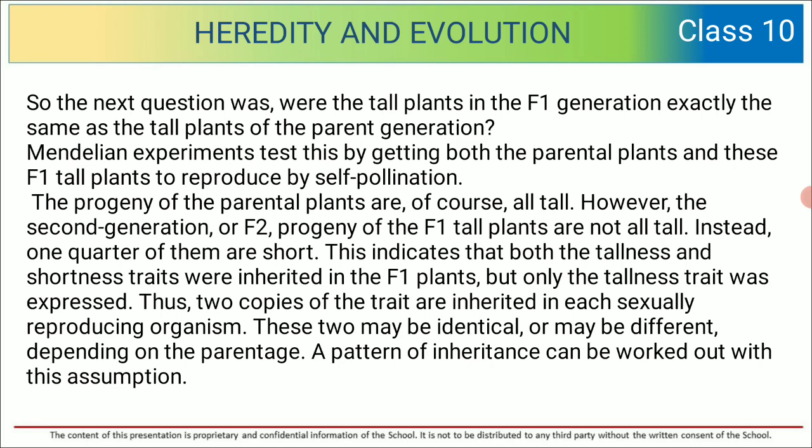However, the second generation, or F2 progeny, of the F1 tall plants are not all tall. Instead, one quarter of them are short. This indicates that both the tallness and shortness traits were inherited in the F1 plants, but only the tallness trait was expressed. Thus, two copies of the traits are inherited in each sexually reproducing organism. Both tall and short traits were inherited, and these two may be identical or different depending on the parentage. A pattern of inheritance can be worked out with this assumption.